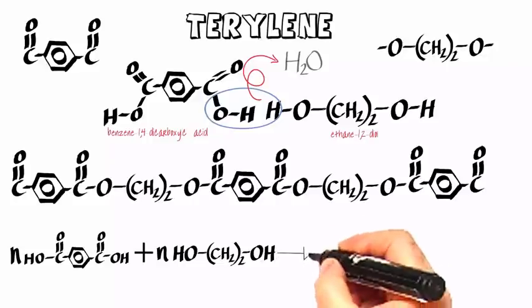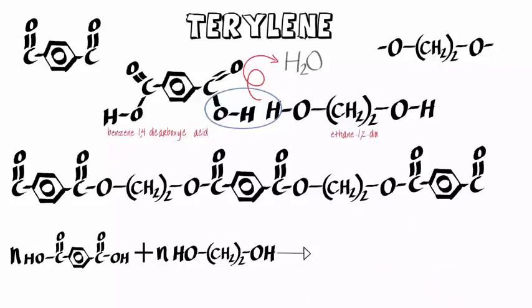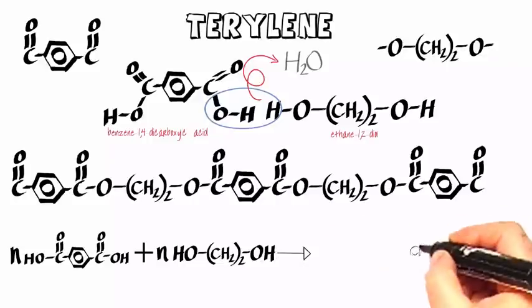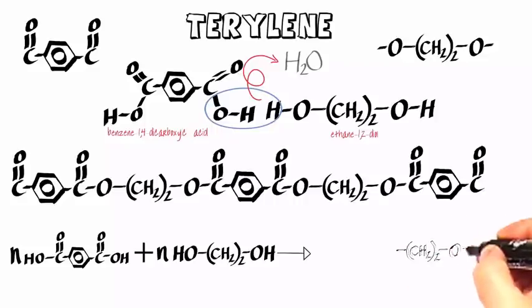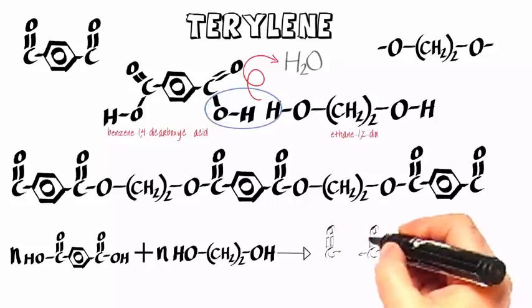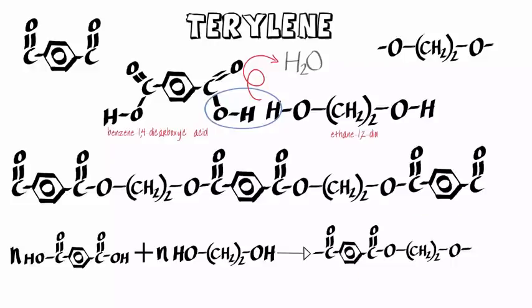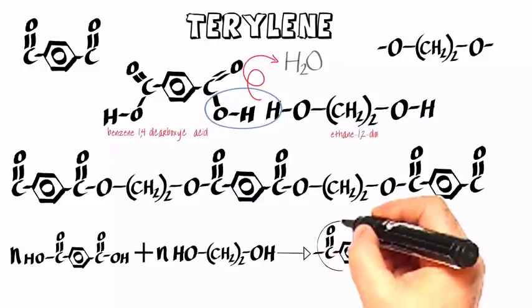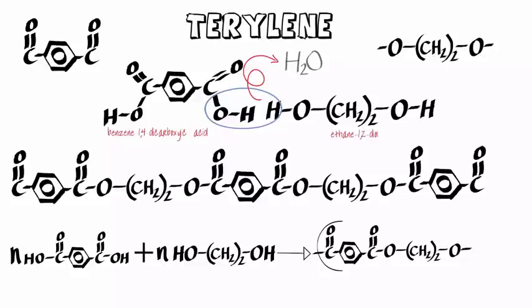And let's see then how we represent the polymer itself. We just show two of these joined up to form a pair, because this is the alternating unit within the polymer chain. And we show that within brackets.